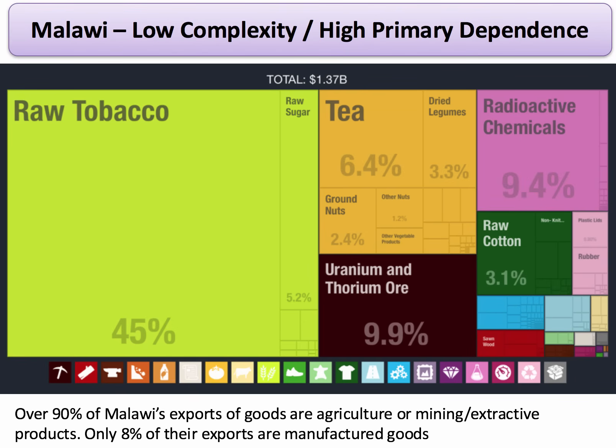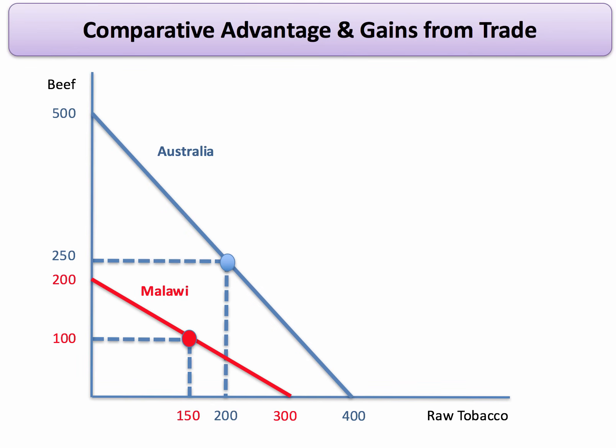So how could a country such as Malawi — a low-income country with a low level of economic complexity — benefit from specialisation and trade with a country such as Australia? Let's take a look at a hypothetical example using PPF analysis. If we take two products, beef and tobacco, Australia has an absolute advantage in both. Malawi's PPF lies within Australia's PPF.